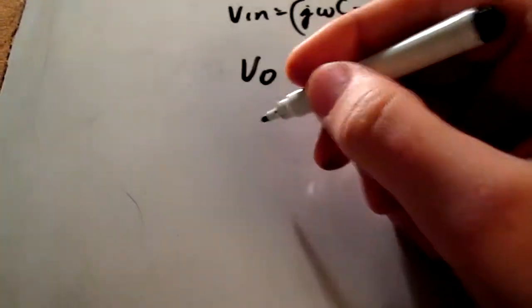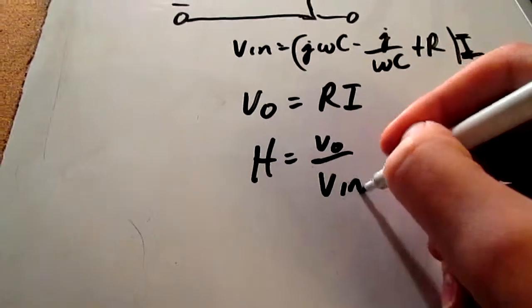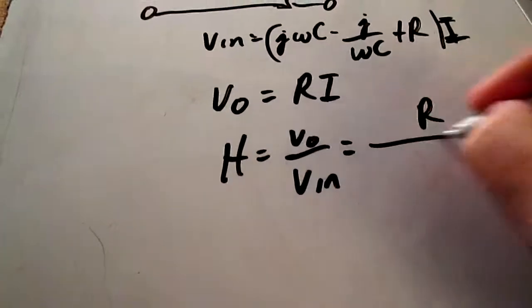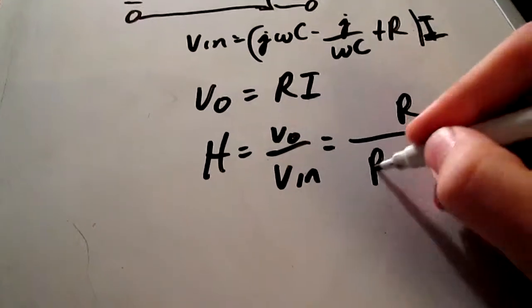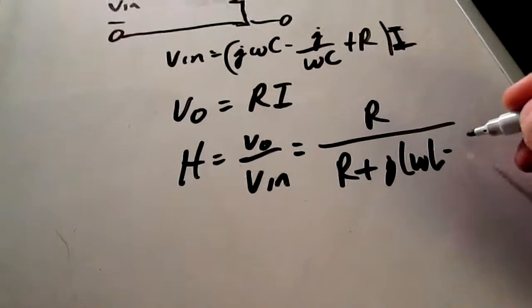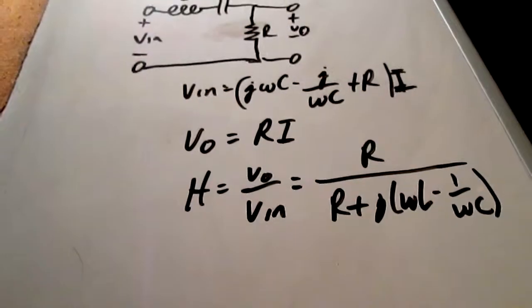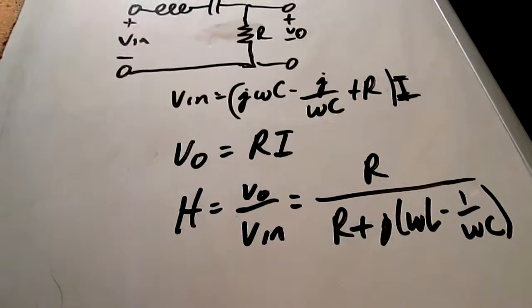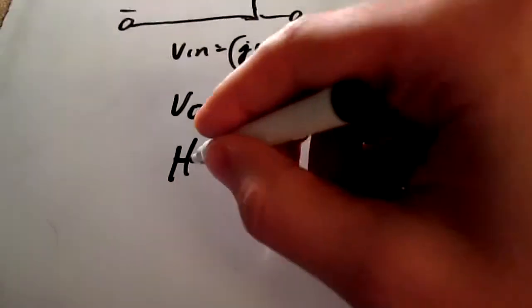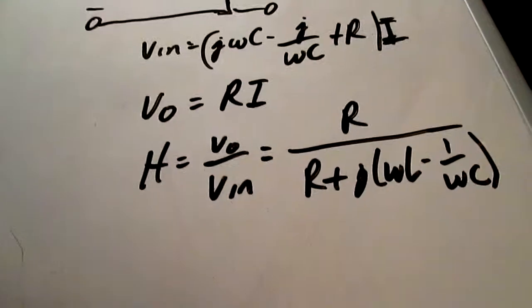And this gives us a transfer function equal to R over R plus j omega L minus 1 over omega C. This is the attenuation. And some important equations.